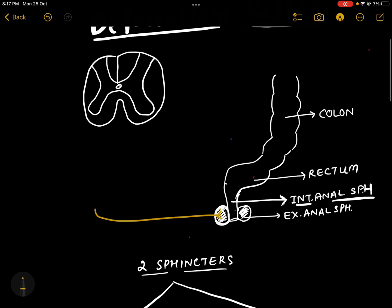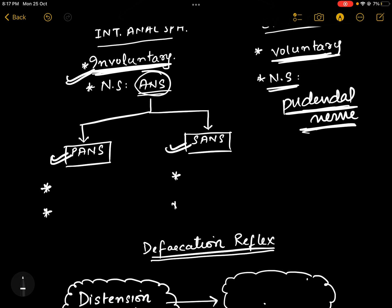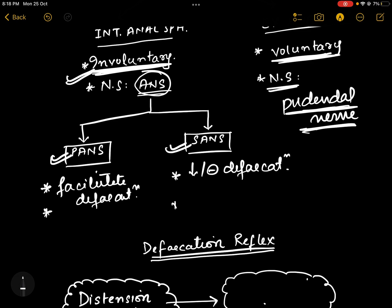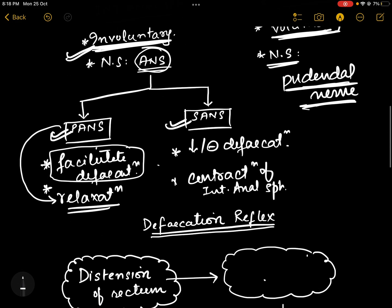Let's complete the diagram — this nerve here is the pudendal nerve. The internal anal sphincter, on the other hand, is under involuntary control and is supplied by the autonomic nervous system. It has both sympathetic and parasympathetic supply. The parasympathetic supply facilitates defecation, while the sympathetic system decreases or inhibits the process of defecation.